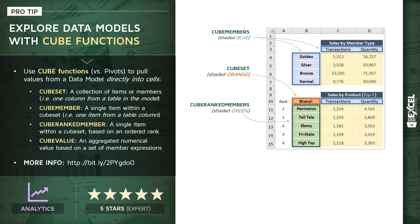Next up, we have a special type called a CubeRankedMember, shaded in green in the visual. These are just like cube members — individual items within a cube set — but the difference is they're based on an ordered rank, which allows us to do things like show the top five products by quantity.